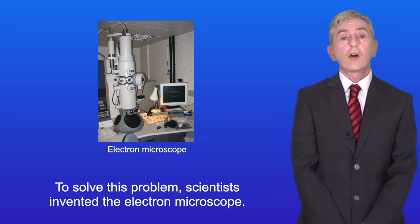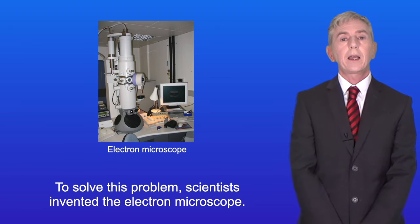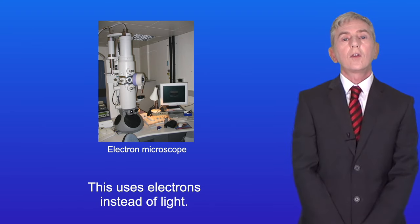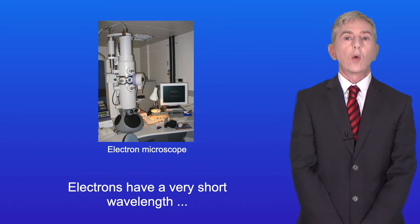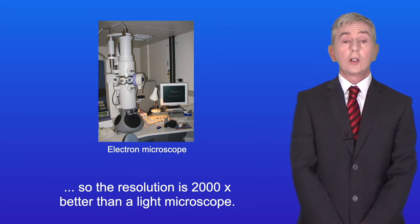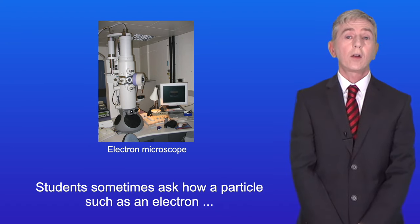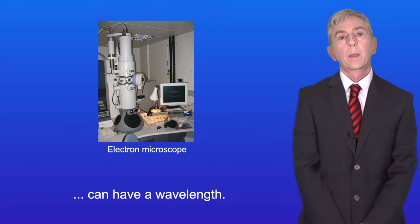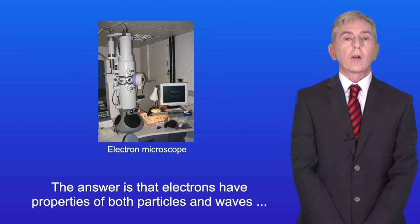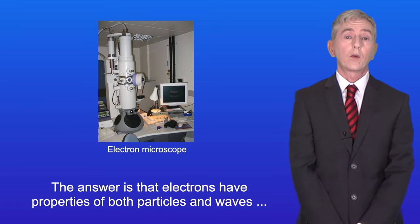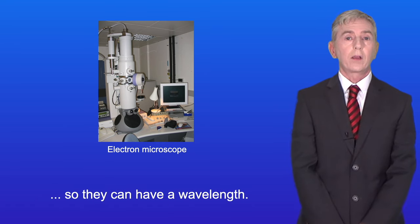To solve this problem, scientists invented the electron microscope. This uses electrons instead of light. Electrons have a very short wavelength, so the resolution is 2000 times better than a light microscope. Students sometimes ask how a particle such as an electron can have a wavelength. The answer is that electrons have properties of both particles and waves.